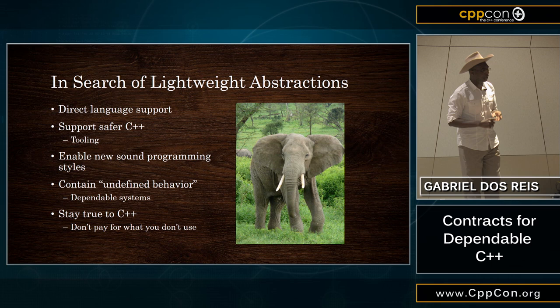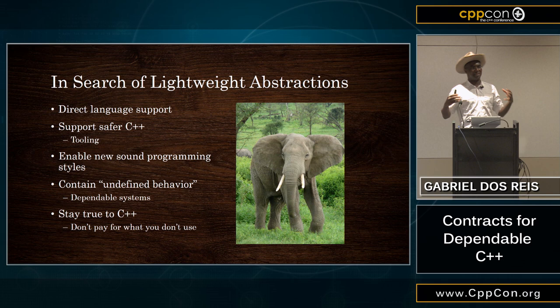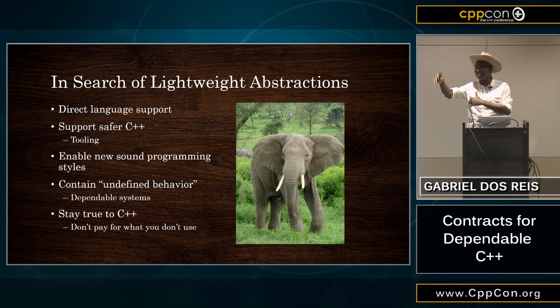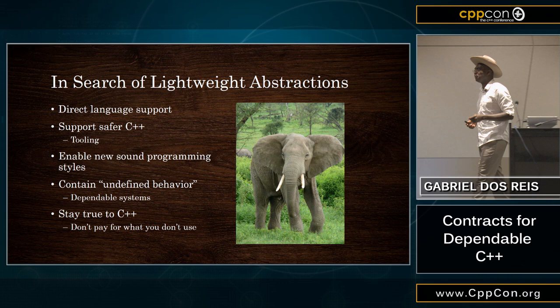We want to contain undefined behavior. We want these contract facilities to say: this is what you assume. And if we get it wrong, please make sure that we don't do something unrelated to the work that we're doing. And of course, we want to do this without overhead. That is the ideal — that is the goal. If I want to use Python or Java or C#, I know where it is. I'm not trying to turn C++ into Java or C#. There is a core of C++ that is safe — that is what we are after.